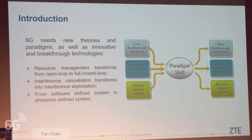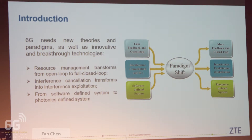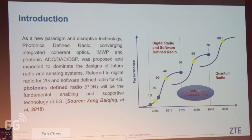I will talk about photonic-defined radio technology as a new paradigm and disruptive technology. Photonic-defined radio converges integrated coherent optics, integrated microwave photonics, and photonic ADC, DAC, and DSP, and is expected to dominate the designs of future radio and sensing systems. Referred to as digital radio for 2G and software-defined radio for 4G, we think photonic-defined radio will be the fundamental enabling and supportive technology of 6G. For beyond 6G, it will be quantum radio.